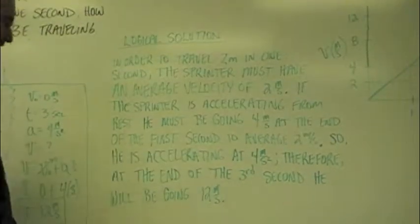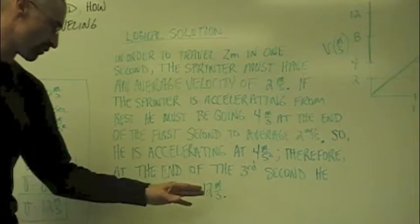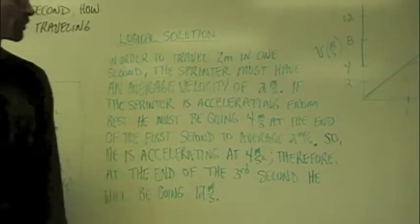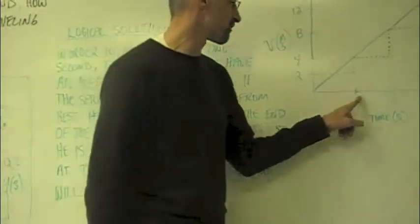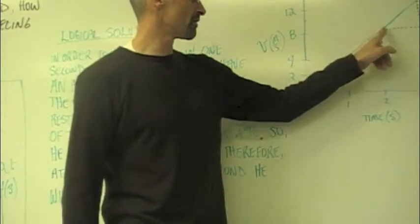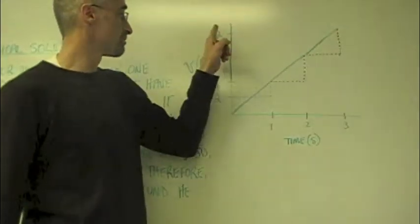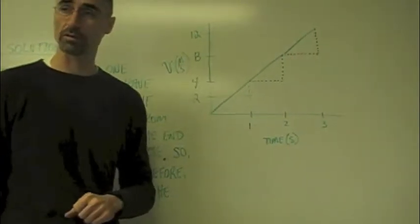Therefore, at the end of the third second, he'll be going 12 meters per second. If you're going up four every second and you do that for three seconds, where are you going to be? 12 meters per second.